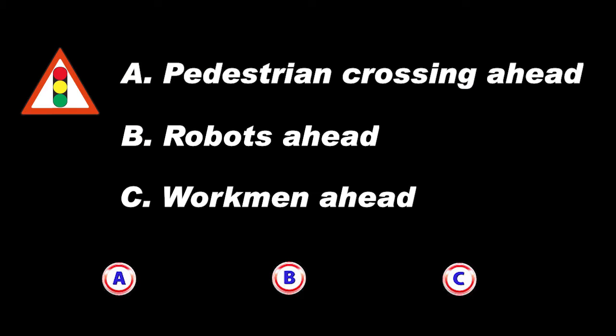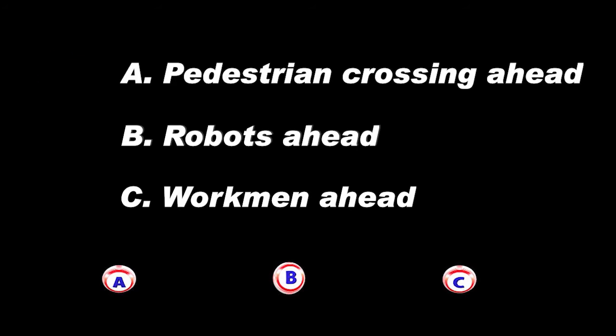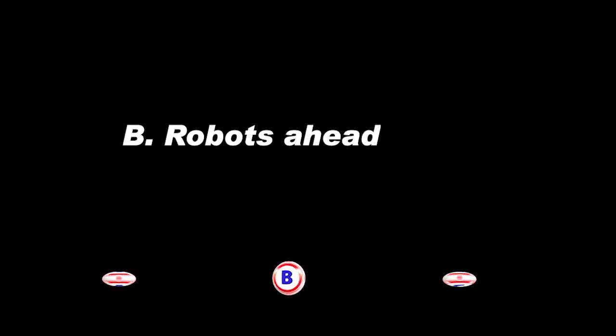Typical examination question: What does the warning sign displayed indicate? A) A pedestrian crossing ahead, B) Robots ahead, C) Workmen ahead. The answer is B.